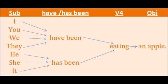If you take the examples, they are like this: I have been eating an apple, you have been eating an apple, they have been eating an apple. He has been eating an apple, she has been eating an apple, it has been eating an apple. Has been is used for he, she, it and have been is used for I, you, we, they.